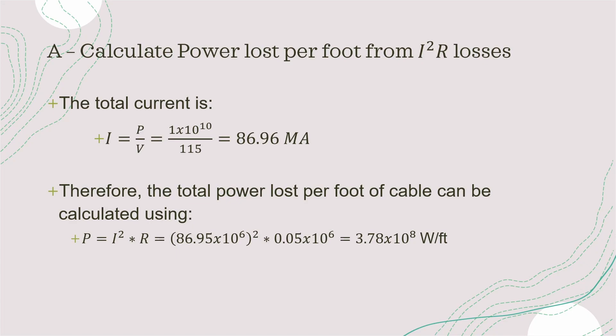P equals I squared times R, so 86.95 times 10 to the 6 squared times 0.05. This gives you a power loss per foot of cable as 3.78 times 10 to the 8, and that's your solution for question A.